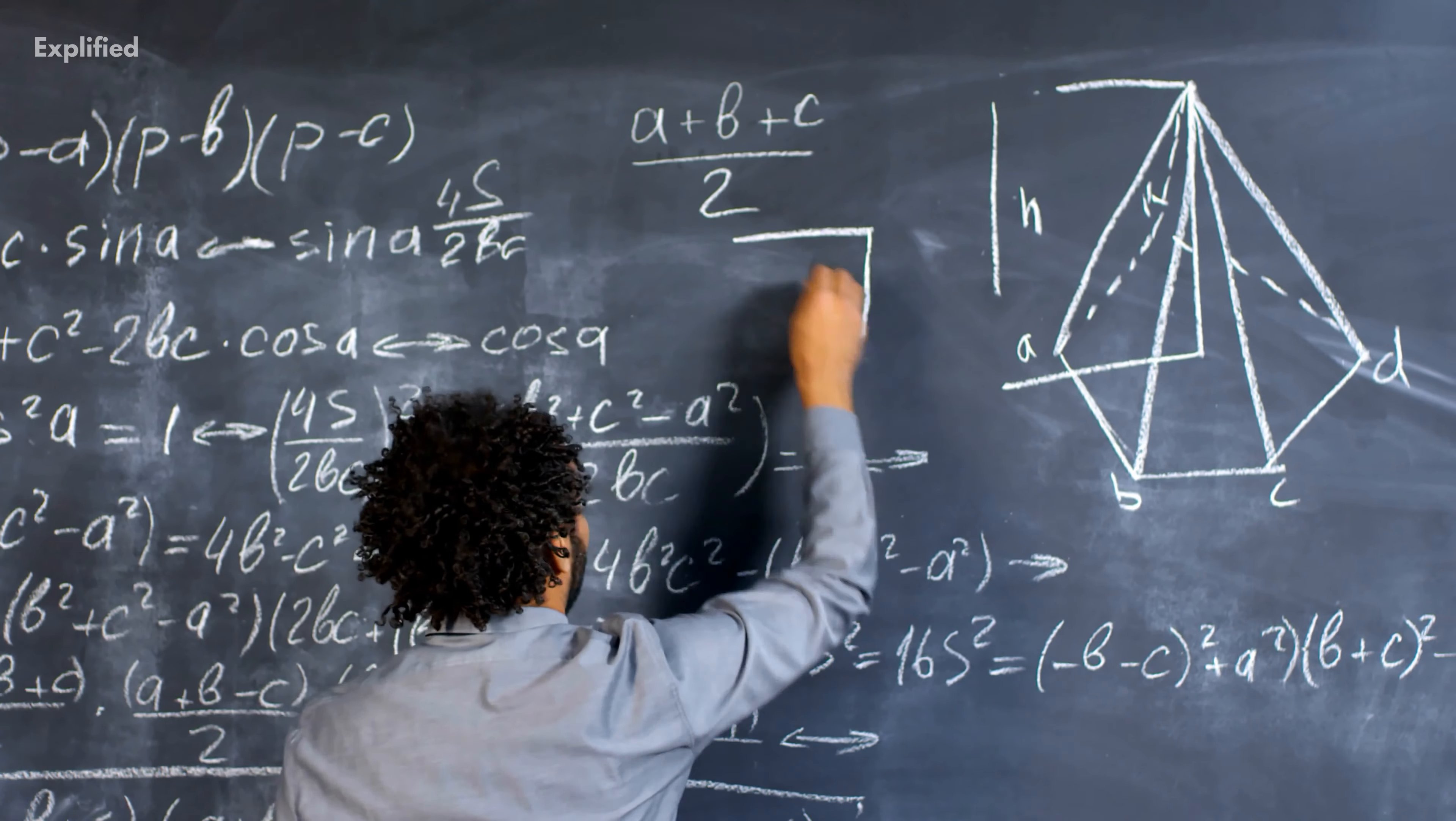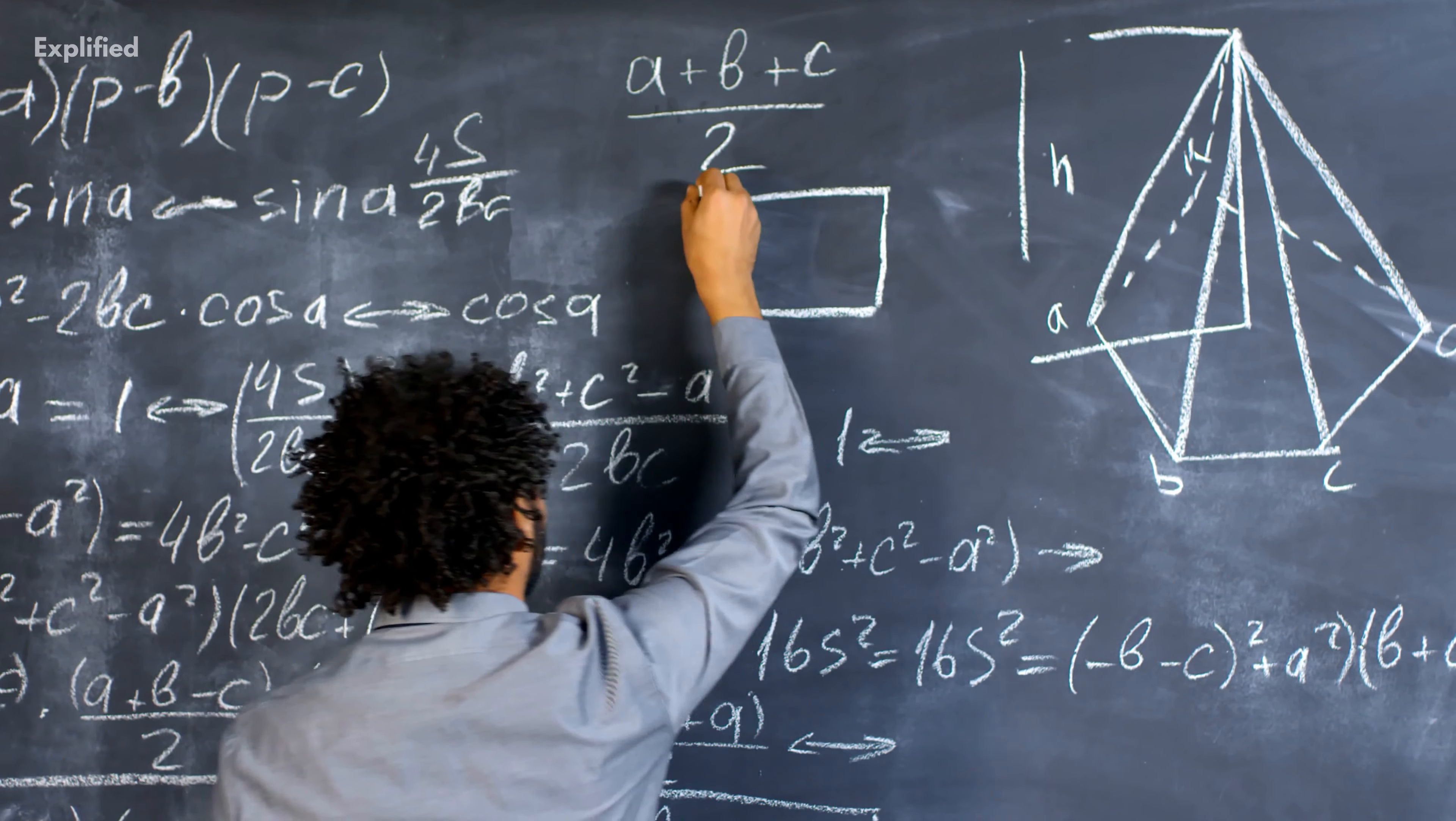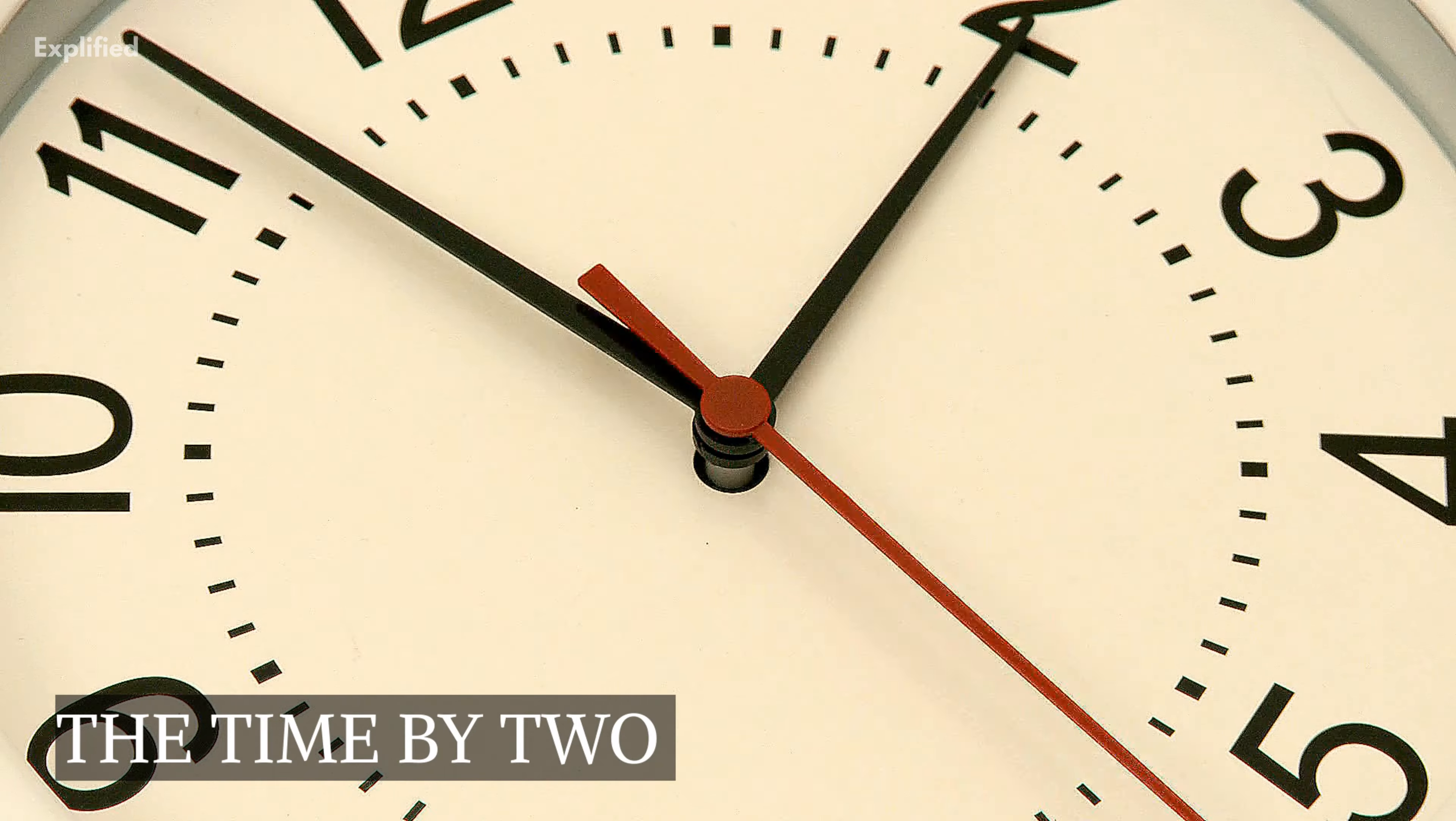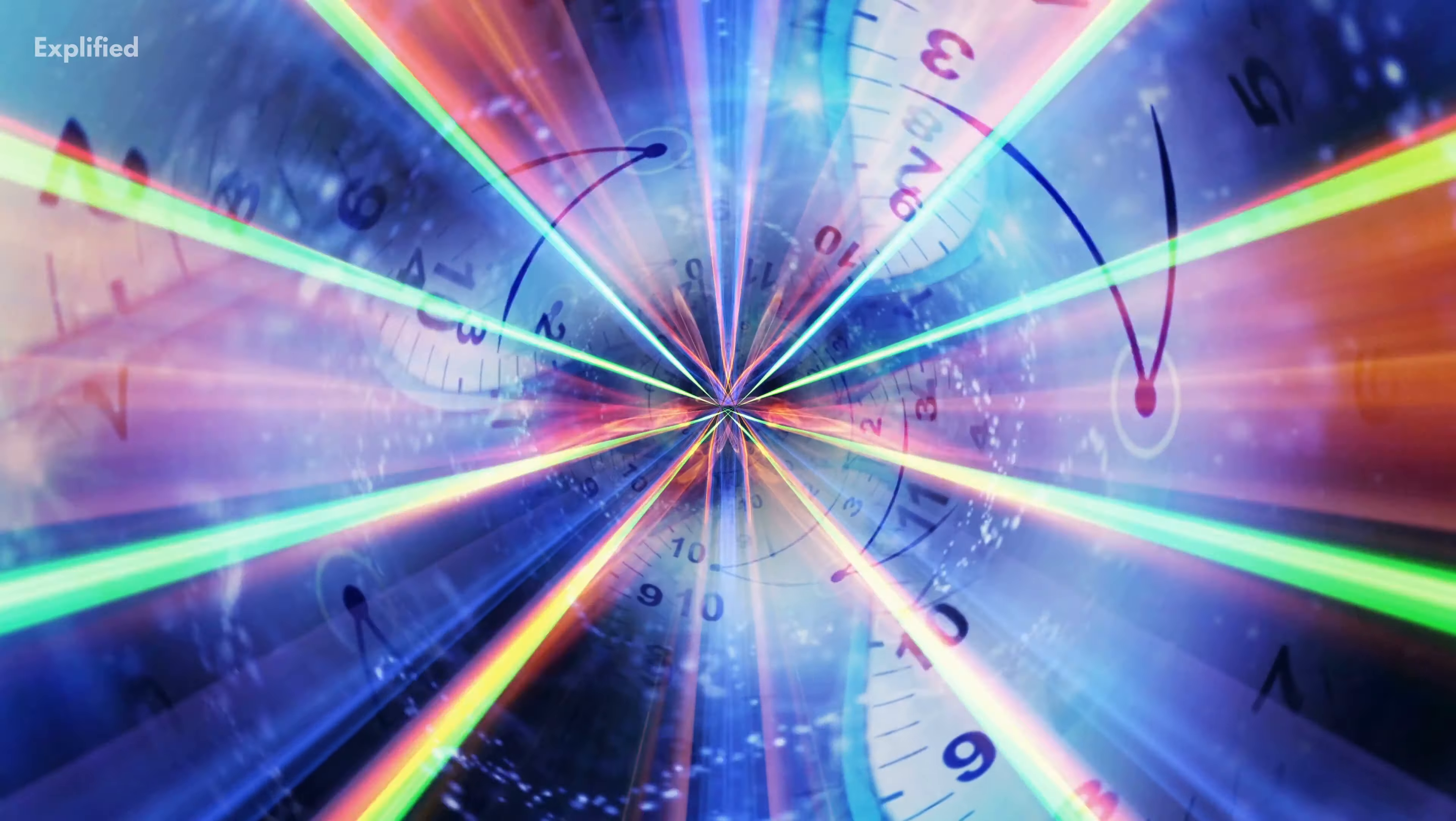You could think that because all round trip speed of light measurements get the same answer, you can just divide the time by two and call it a day. This is precisely what Einstein did. He assumed the travel time was the same both ways.